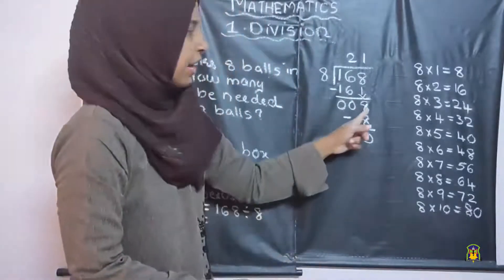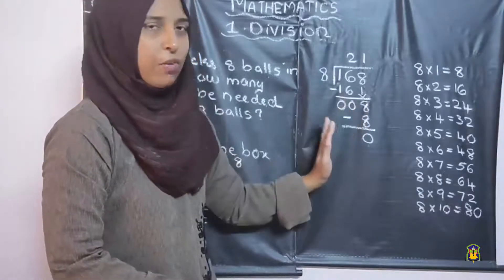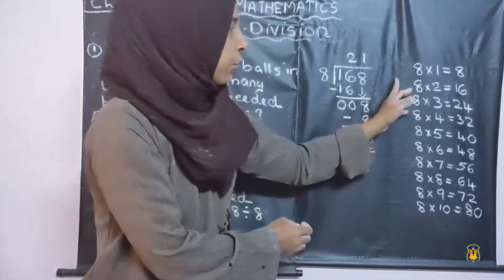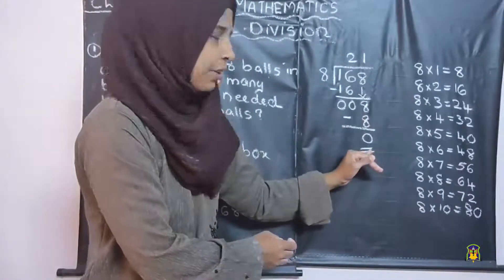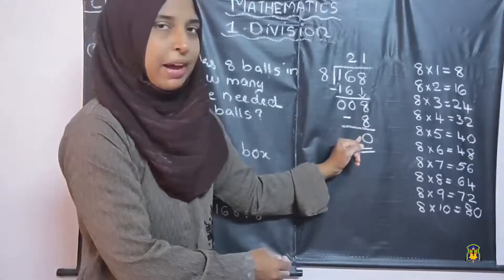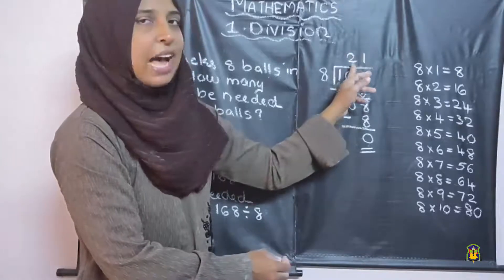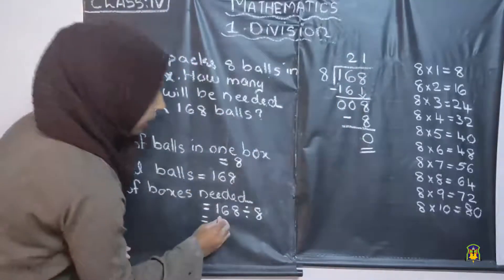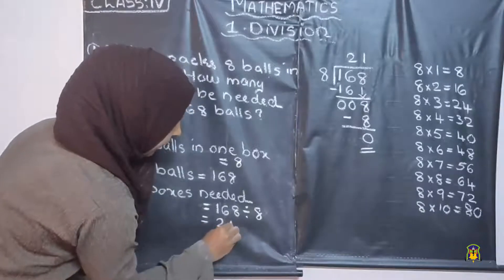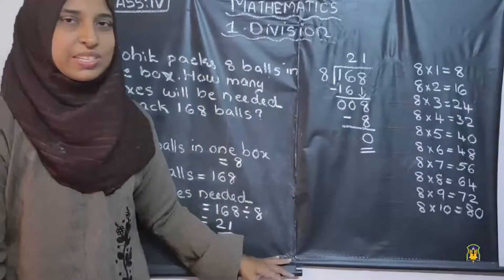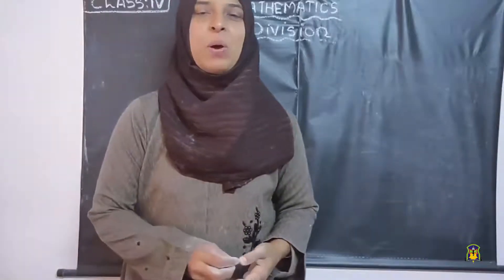Here also 0, so writing 0 before a number has no value, no need to write that. There are no other numbers to bring down, so we can stop here. The remainder is 0 and the answer is 21 — so number of boxes needed is 21. Understood, children? So only this much for today. Study well. Write your notes neatly. Thanks.